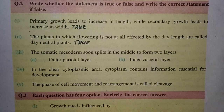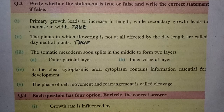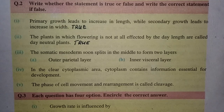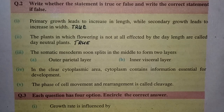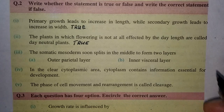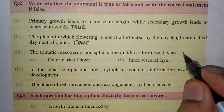The somatic mesoderm soon splits in the middle to form two layers: the outer parietal layer and the inner visceral layer. This is a false statement.